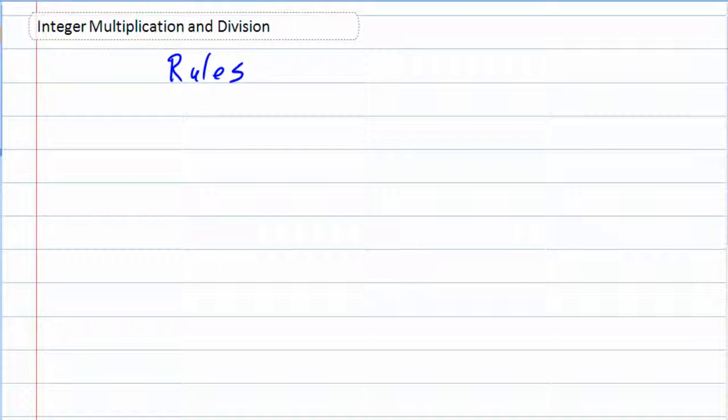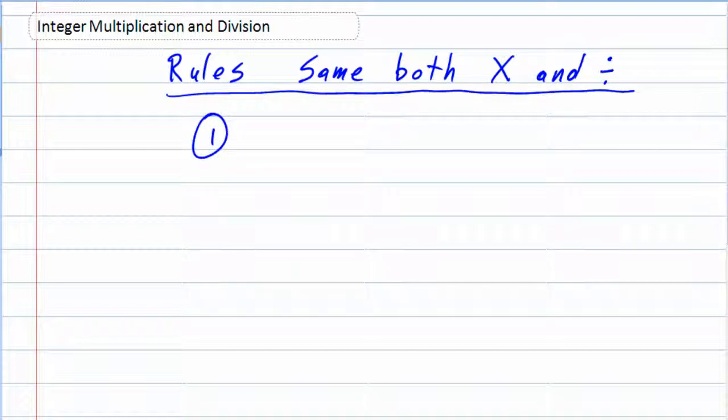The nice thing about these rules is that they are the same rules for both multiplication and division. So we're not going to have to learn different sets of rules depending on whether it's multiplication or division. Just one set of rules cover both. And there's only two rules involved.